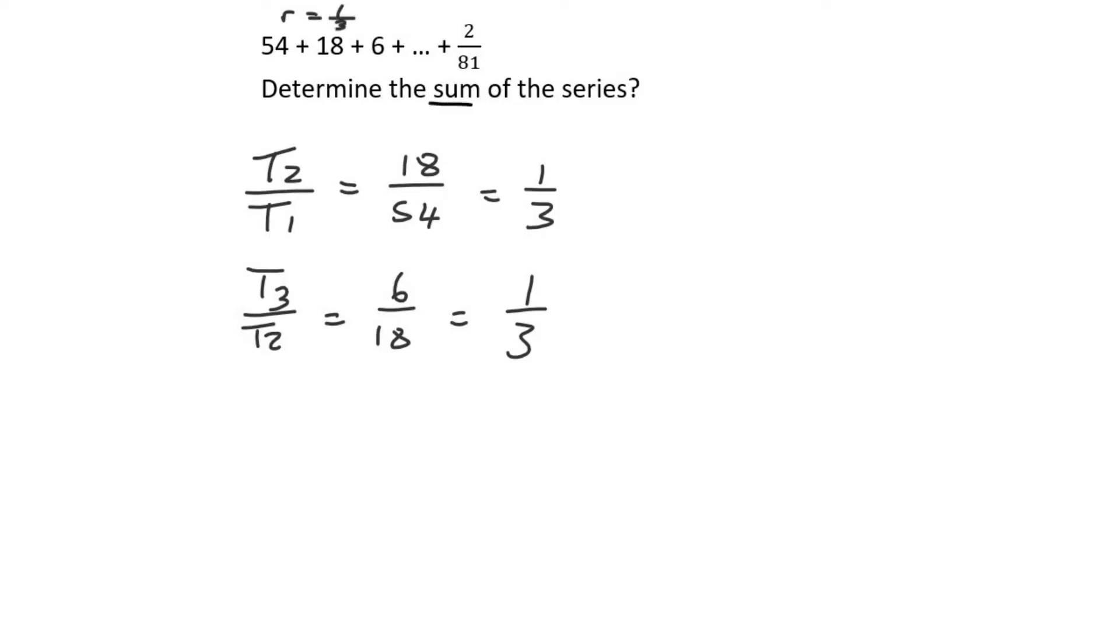So it should be quite easy then because we can just use the sum formula for a geometric pattern. However, we do not know how many terms there are. We do know that the last term is 2 over 81.